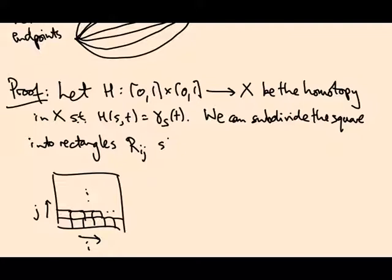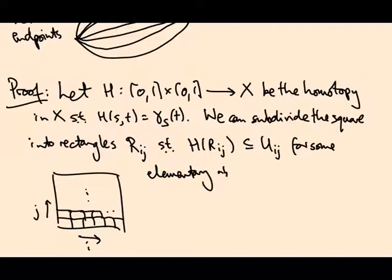Such that H of R_ij is contained in U_ij for some elementary neighbourhood U_ij. Why is this true? I'll leave you to think about that.